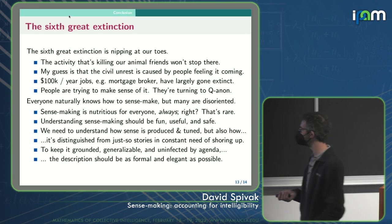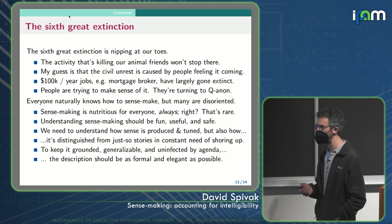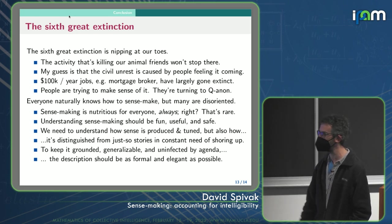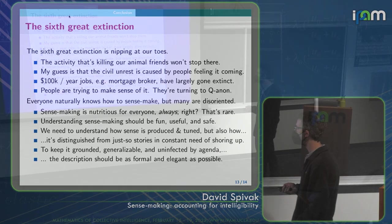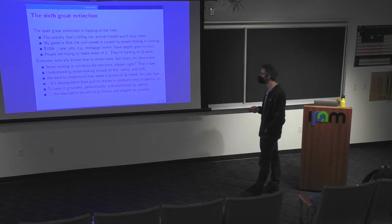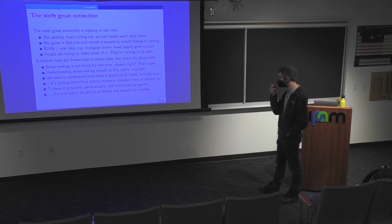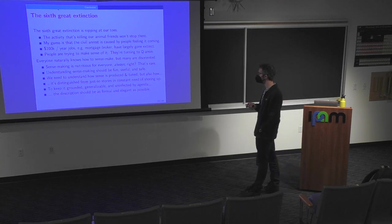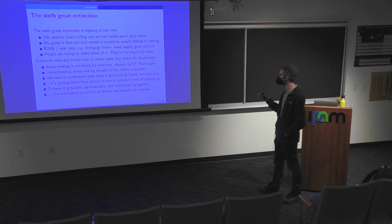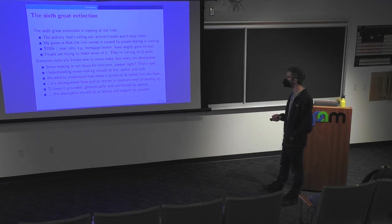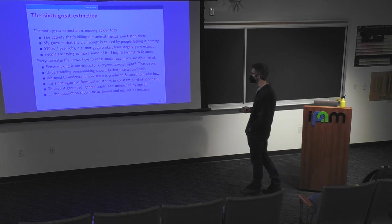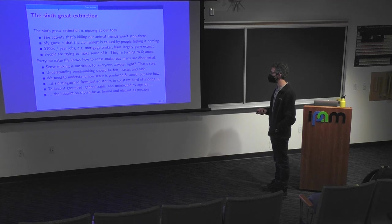So understanding sense making should be fun, useful, and safe. It's not the kind of AI building that would build paperclip maximizers. It's the kind of AI building that would make a sensible world where there was more consciousness. In other words, experience and sense. So if we understood how sense was produced and tuned, that would be great. But also how it's distinguished from the just so stories that are in constant need of shoring up that you find in QAnon. It's just like, oh, because of this and this, and oh, well, that's happened because of this. Constantly missing a feeling of sense. But to keep this sense making thing grounded and generalizable and uninfected by agenda, I think that it should be as formal and elegant as possible.